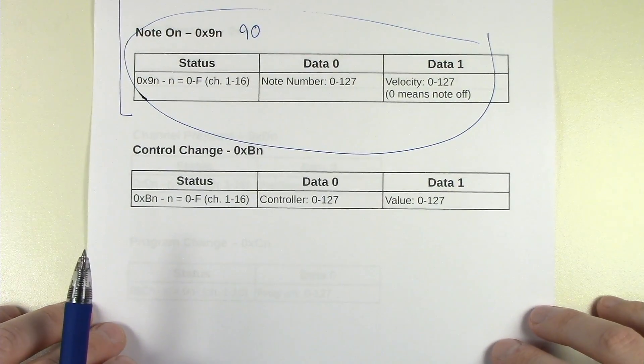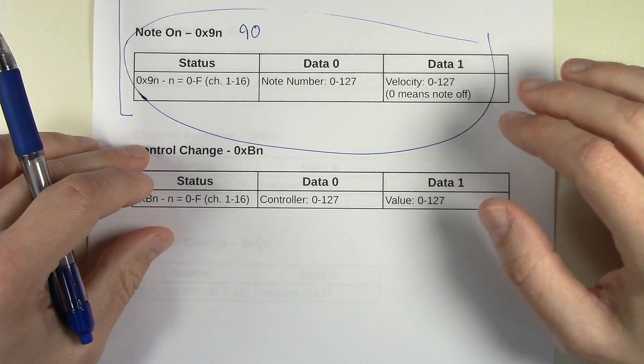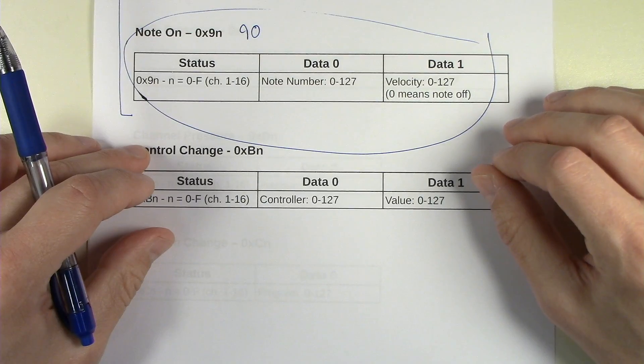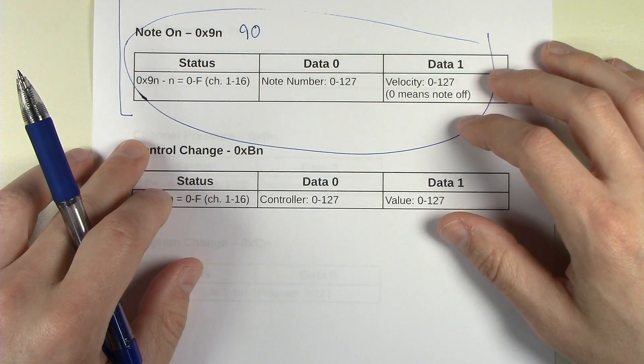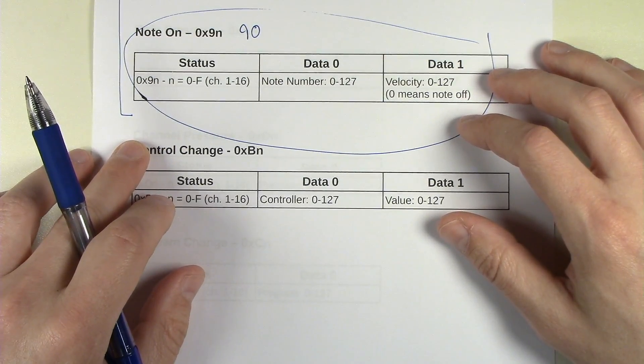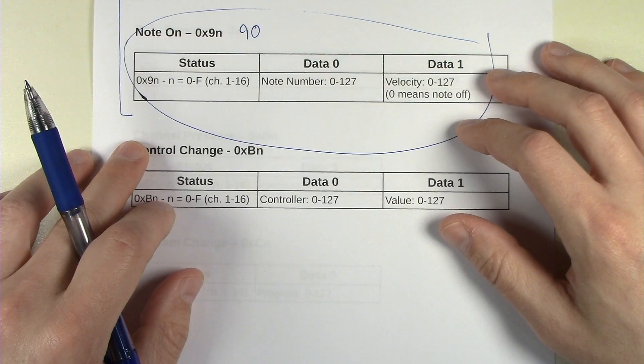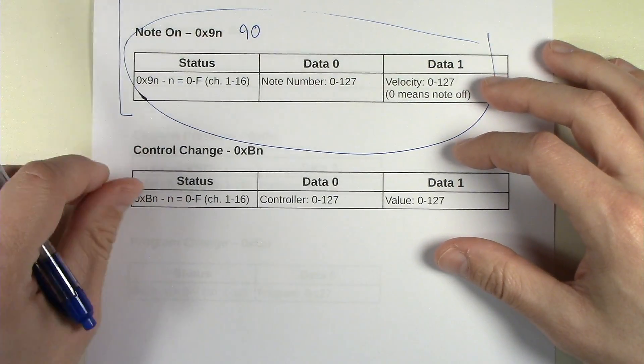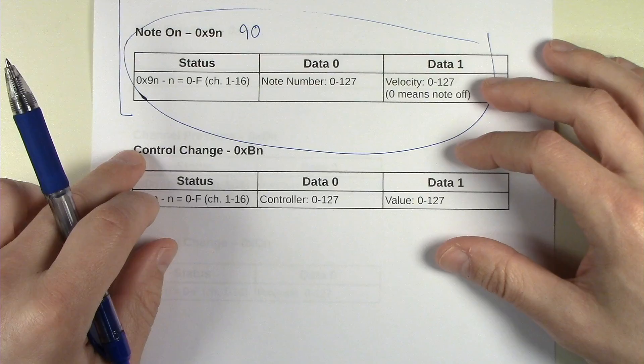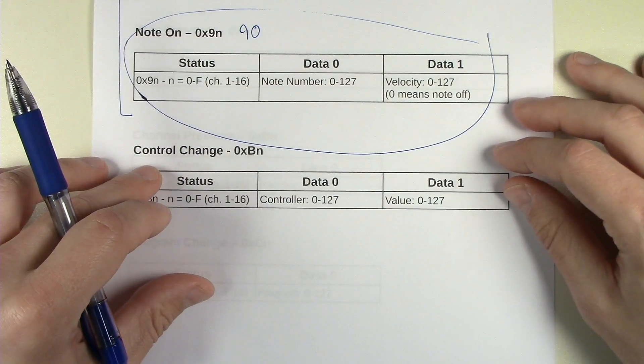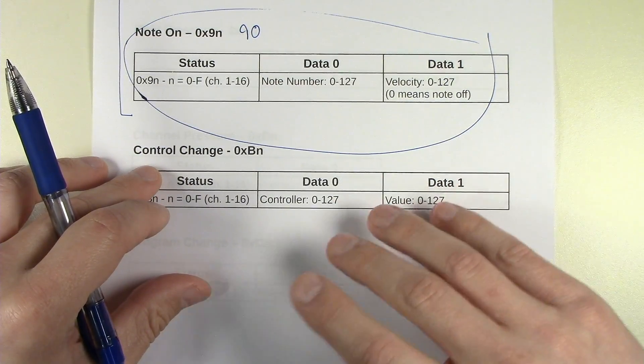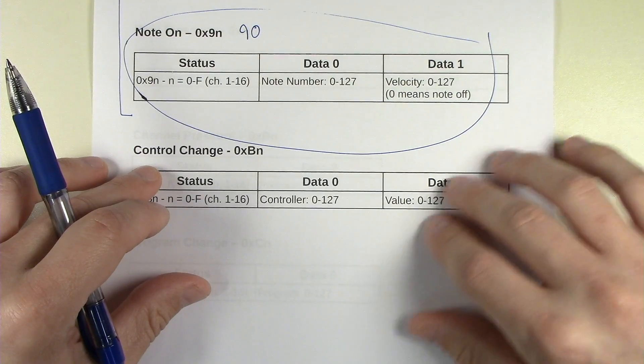Control change messages. These are the ones like knobs, the modulation wheel, the damper pedal on a keyboard that has a pedal for holding notes. The volume slider or volume knob on a lot of keyboards. They send control change messages.